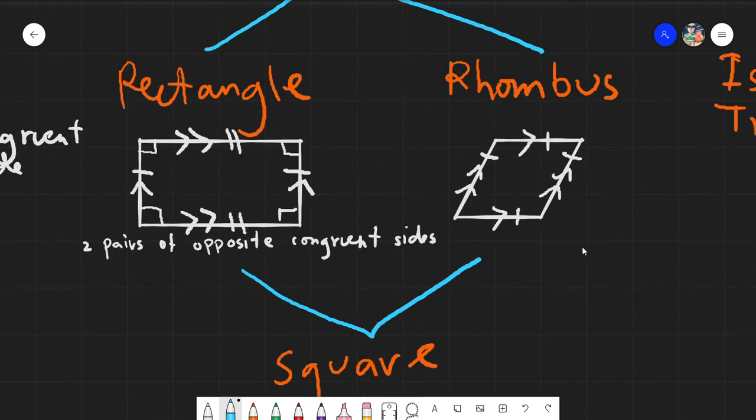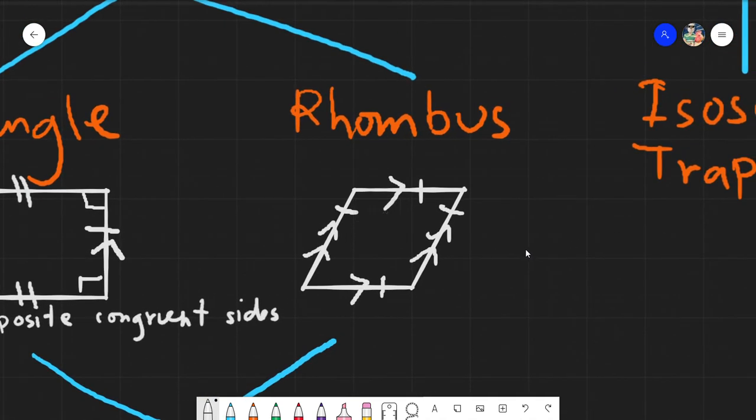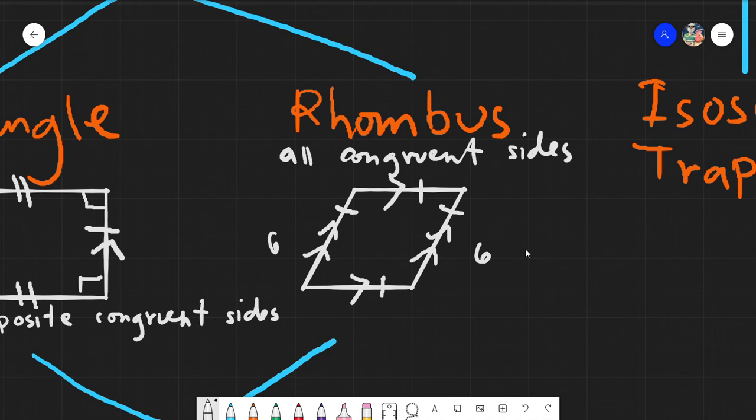And then we have the rhombus. The rhombus by definition is just simply a parallelogram with all sides, all congruent sides. Lahat ng sides sa congruent. Meaning, if this is 6, everything is also 6. Ganun lang. It's quite easy.